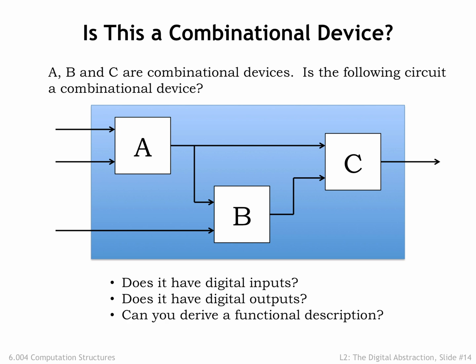Third, can we derive a functional specification for the overall system? In other words, can we specify the expected output values for each combination of digital input values? Yes! We can by incrementally propagating information about the current input values through the component modules. In the example shown, since A is combinational, we can determine the value on its output given the value on its inputs by using A's functional specification. Now we know the values on all of B's inputs and can use its functional specification to determine its output value.